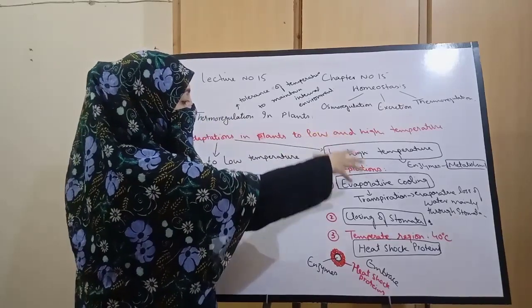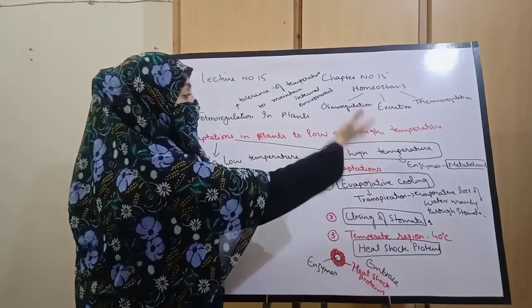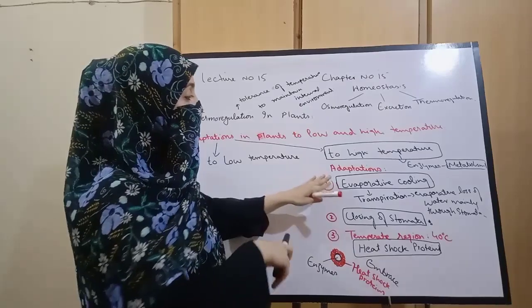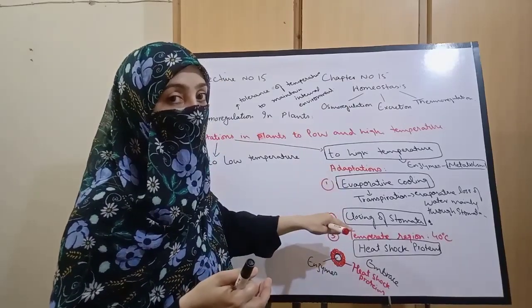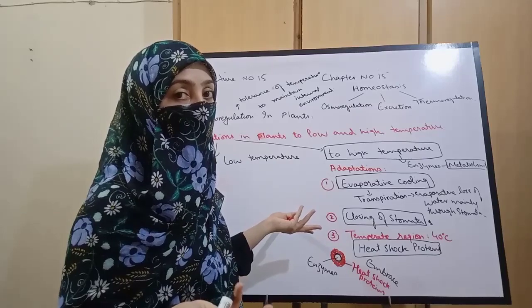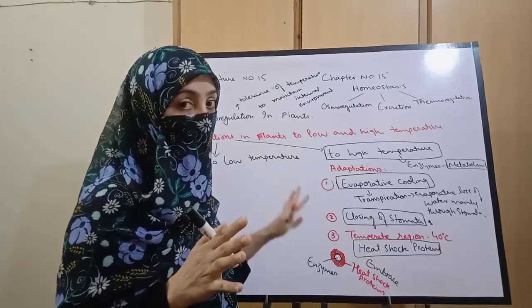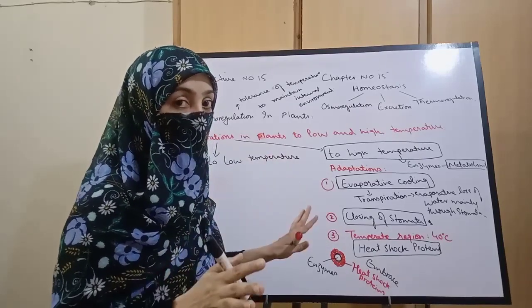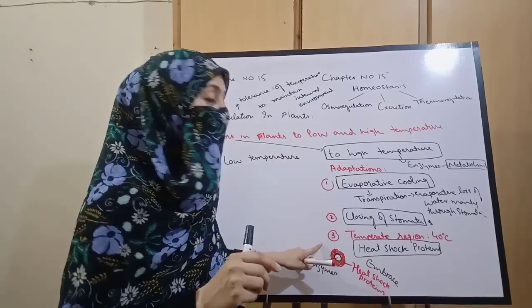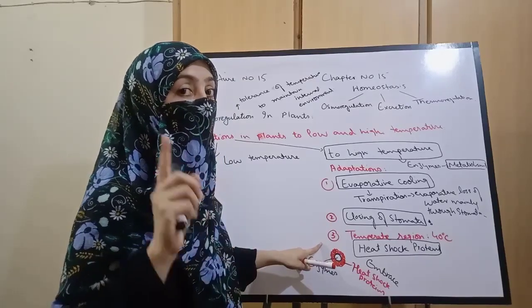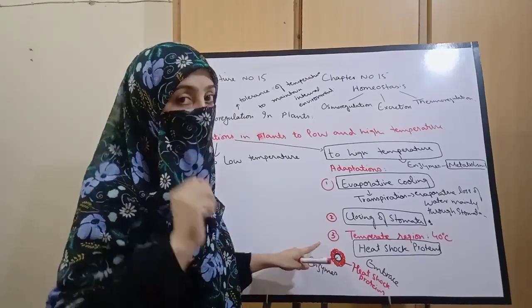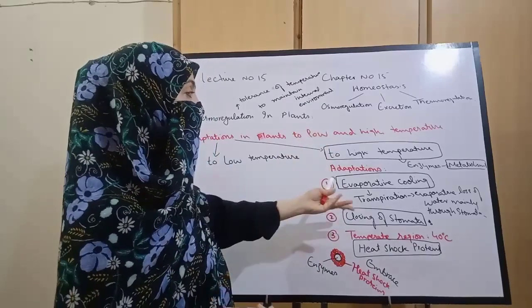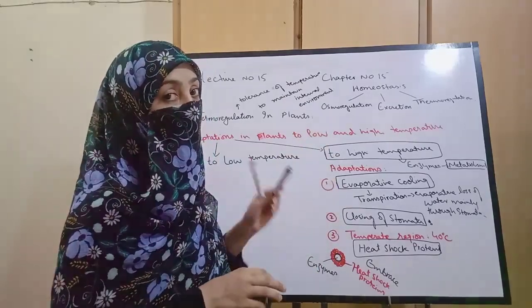So these are three strategies to face high temperature: first, evaporative cooling through evaporation; second, closing stomata so activity stops and the plant is protected from temperature; and third, production of heat shock proteins to prevent enzymes and other proteins from denaturation. This was the easy topic of adaptations of plants to high temperature.